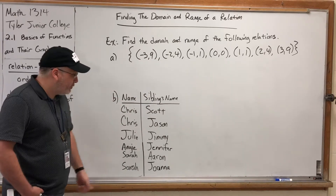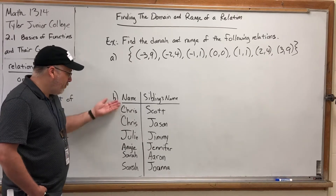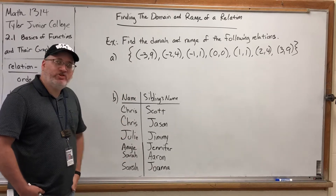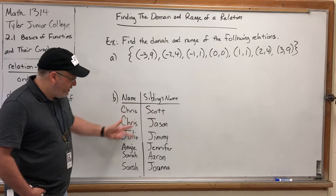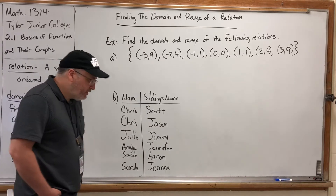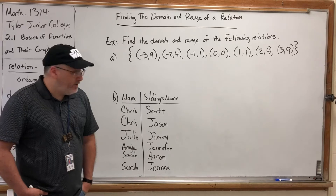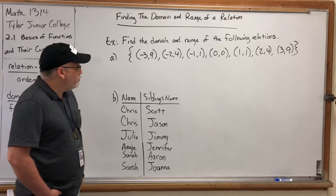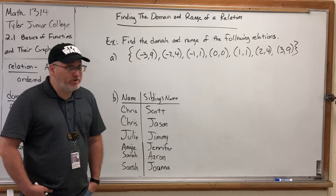Ordered pairs can also be listed in a table. For example, in this table the left column has the name of a person and the right column has the name of one of their siblings. So that's all a relation is — it's a set of ordered pairs. These are not the only ways we can express relations; I'm going to show you two more ways to represent relations as we go through this series of videos.